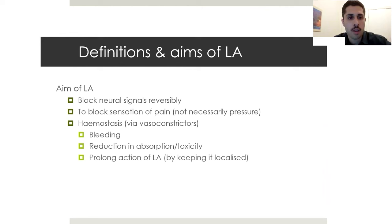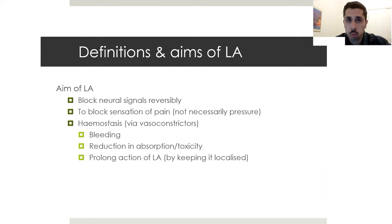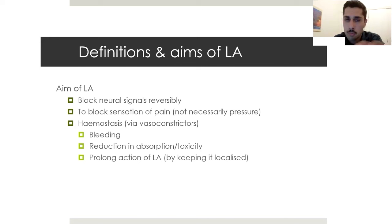What are we actually trying to achieve with a local anesthetic? We want to block neuronal signals reversibly - blocking pain sensation, not necessarily pressure or proprioception. As a secondary goal we want hemostasis to help with the operative field. Vasoconstrictors help reduce bleeding, limit systemic absorption and thus toxicity, and prolong the action of the LA by keeping it localized. This also reduces the total amount of LA needed, further reducing systemic toxicity.